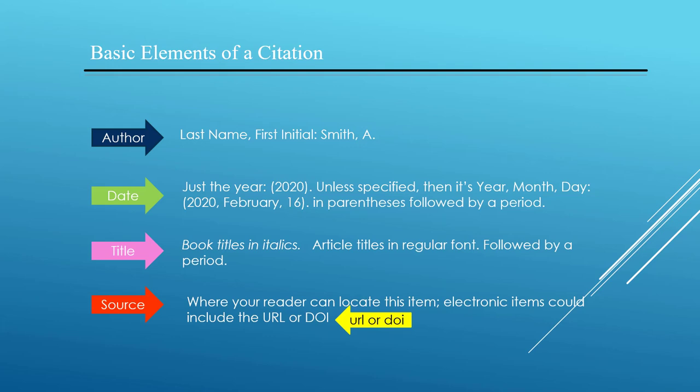There are four key pieces of information you need to know about each work you cite in your paper: the author, the title, the date, and where it was published, or the source.